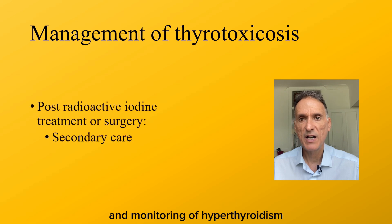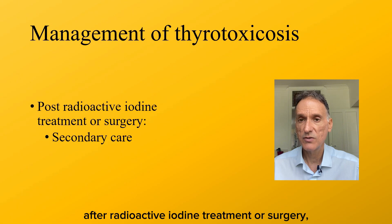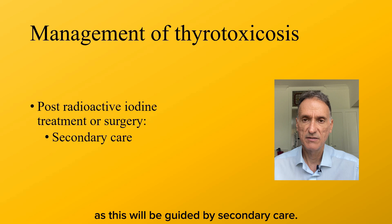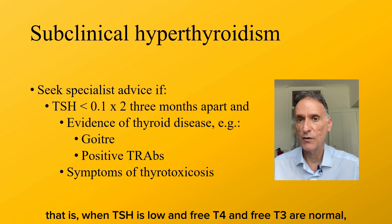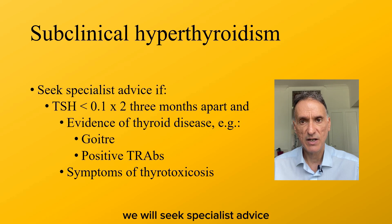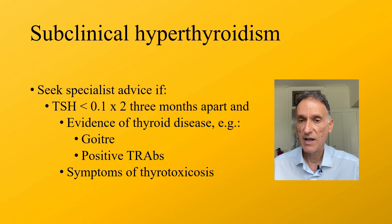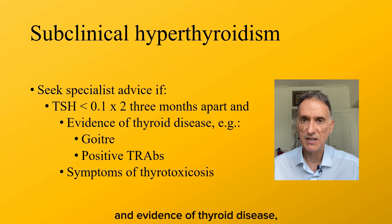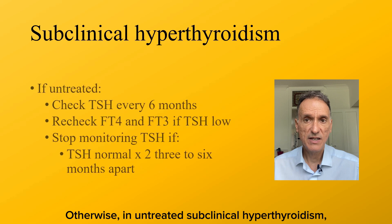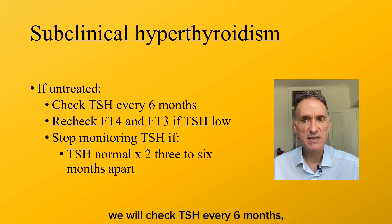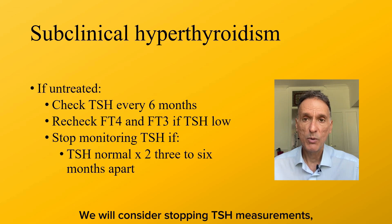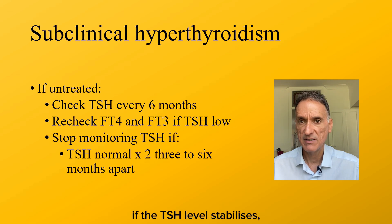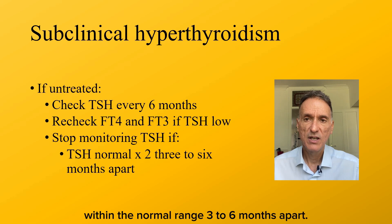I will not cover the follow-up and monitoring of hyperthyroidism after radioactive iodine treatment or surgery, as this will be guided by secondary care. For subclinical hyperthyroidism — when TSH is low and free T4 and free T3 are normal — we will seek specialist advice if they have two TSH readings lower than 0.1 at least three months apart, with evidence of thyroid disease such as a goitre or positive thyroid antibodies, or symptoms of thyrotoxicosis. Otherwise, in untreated subclinical hyperthyroidism, we will check TSH every six months, and if the TSH level is outside the normal range, we will also check free T4 and free T3. We will consider stopping TSH measurements if the TSH level stabilises — that is, two similar measurements within the normal range three to six months apart.